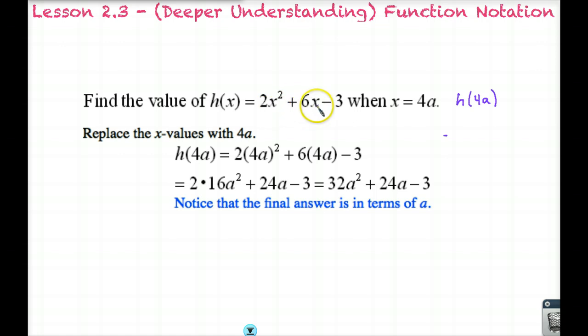In place of x you would put 4a. Earlier you might have had something like h(4) and you would replace all the x values with 4, but we can do this with variables as well. When we replace all the x values with 4a we have to be very careful that we keep the parentheses around the 4a. By keeping it in parentheses you're making sure that you're squaring the 4 as well as the a.